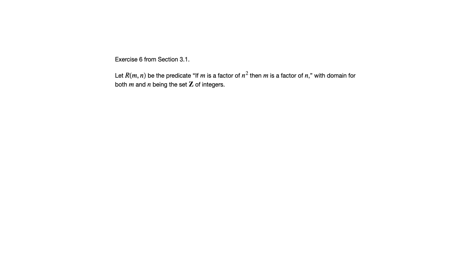Exercise 6 says, let R(M,N) be the predicate if M is a factor of N squared, then M is a factor of N, with domain for both M and N being the set Z of integers. Part A says, explain why R(M,N) is false if M equals 25 and N equals 10.